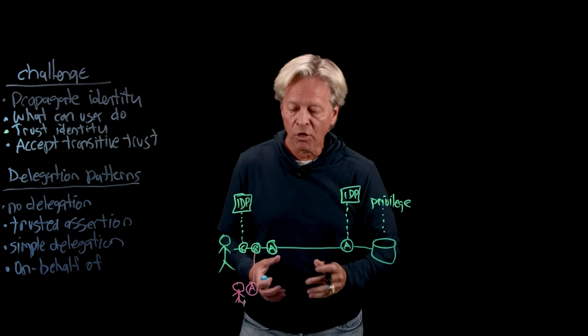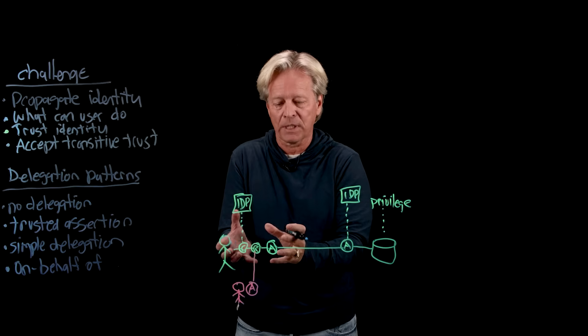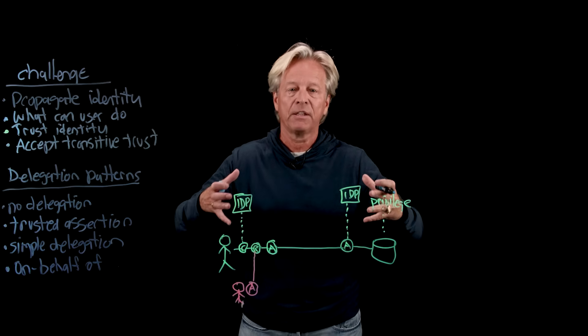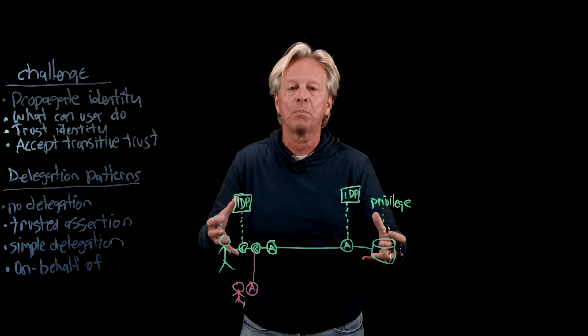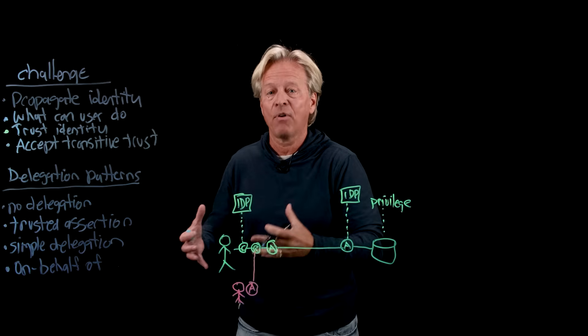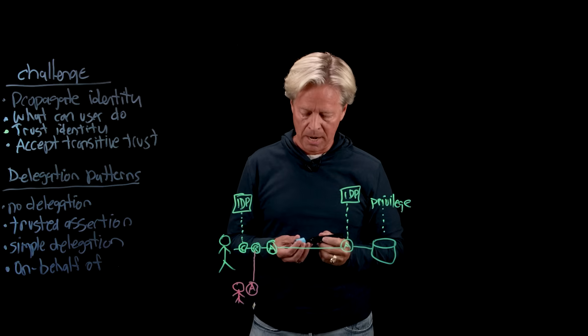This really starts introducing yet another challenge: how do we have a user accept transitive trust? The user is not actually trusting an individual agent — what they're doing is trusting the system to act and behave on their behalf.